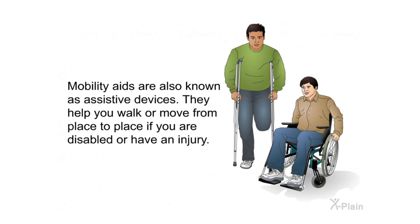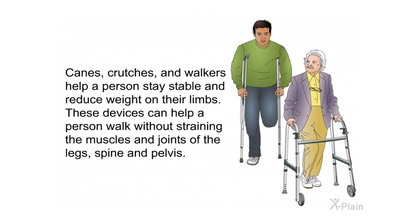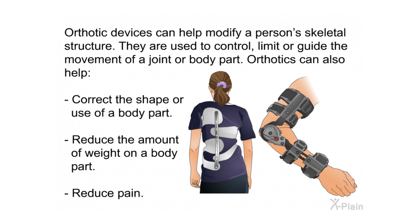Summary. Mobility aids, also known as assistive devices, help you walk or move from place to place if you are disabled or have an injury. They include canes and crutches, walkers, orthotics, prosthetics, wheelchairs, and scooters. Canes, crutches, and walkers help a person stay stable and reduce weight on their limbs. Orthotic devices are used to control, limit, or guide movement of a joint or body part, and can also correct the shape of a body part, reduce weight on a body part, and reduce pain.